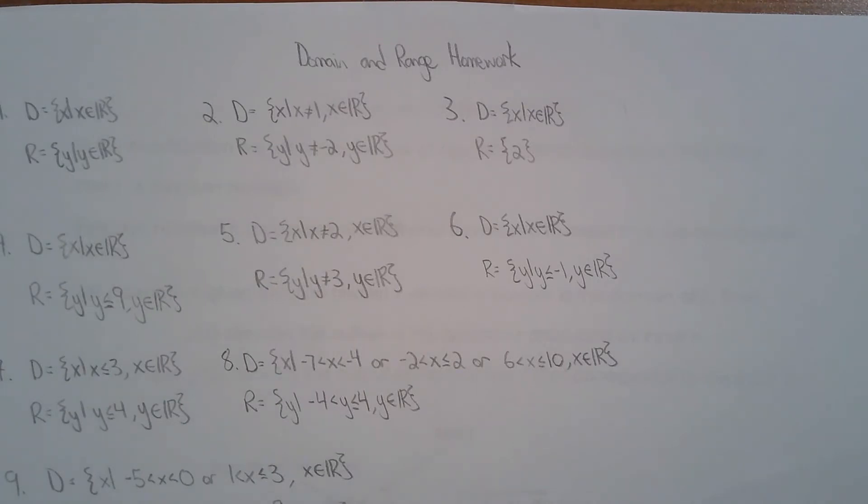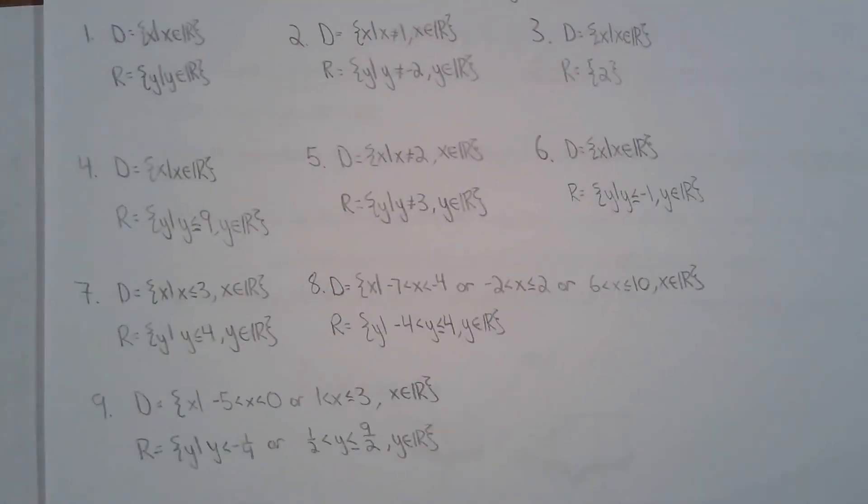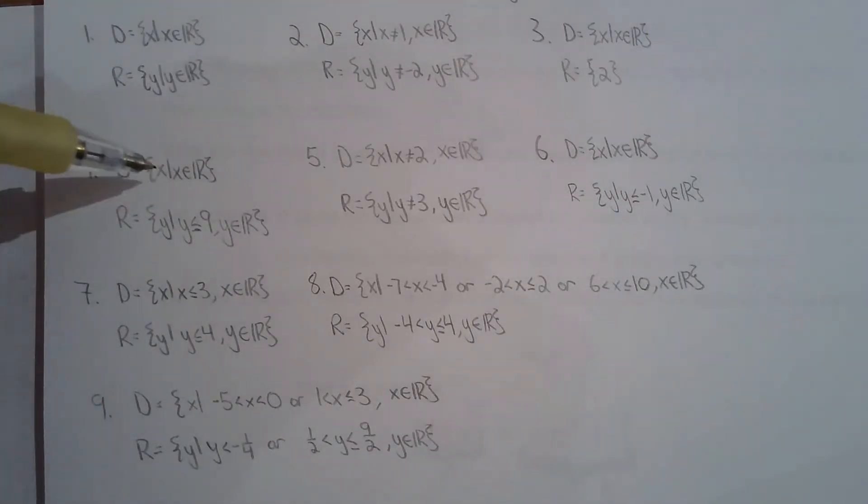For number four you have a parabola. It's an opening down parabola, so for parabola X is all real numbers, no restriction on domain, but Y in this case has to be less than or equal to nine because nine is the optimal value and the parabola is opening down.